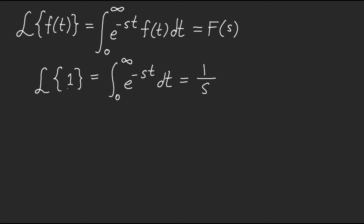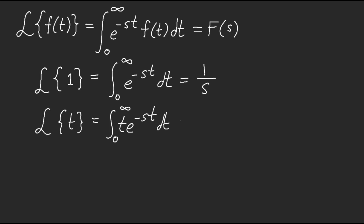If you do the Laplace of t, then it's like integration by parts and you should end up with 1 over s squared. I had to look carefully — the Laplace of the integral from 0 to infinity of e to the negative st times t dt should come out as 1 over s squared. Integration by parts, or technically the gamma function.